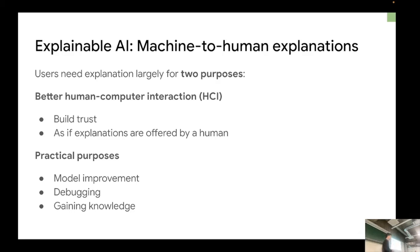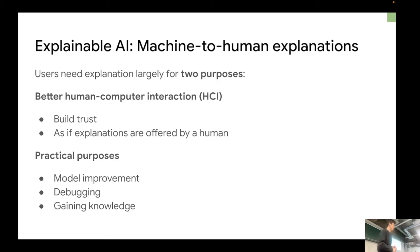There are two purposes for explanations in general. First, for better human-computer interaction — building trust and making machine outputs more human-friendly, more like talking to a human. Second, for model developers who need explanations to improve and debug the model when there's a problem, and to gain more knowledge of what's going on inside — like whether the model is using some weird training data.